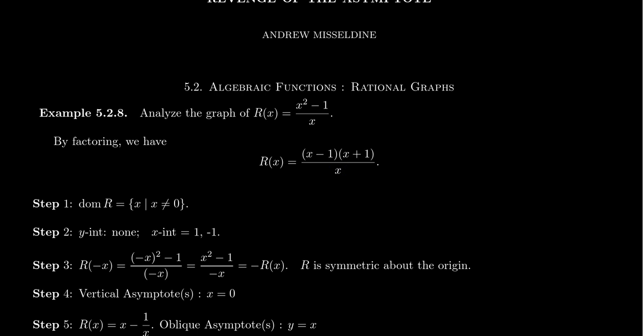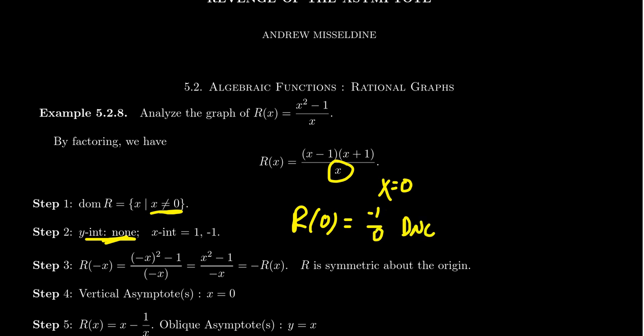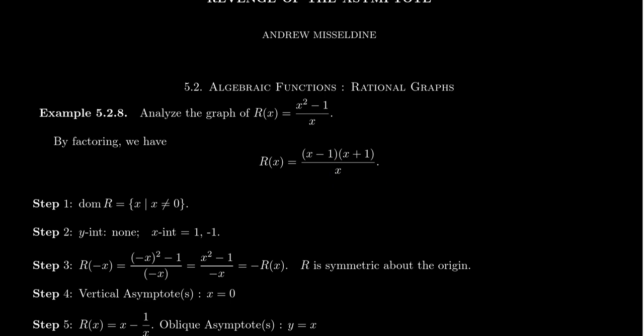Without any cancellation, first identify the domain. What makes the denominator go to 0? Our denominator goes to 0 when x = 0, so that is a forbidden value — x cannot equal 0. The fact that x cannot equal 0 means we don't have a y-intercept, because plugging in x = 0 gives -1/0, which is undefined. So this function doesn't have a y-intercept.